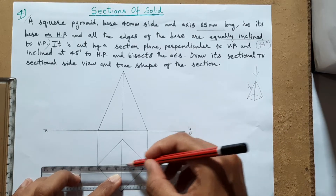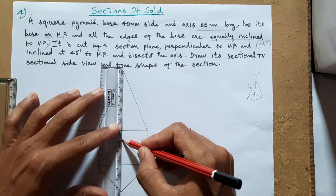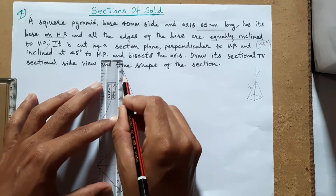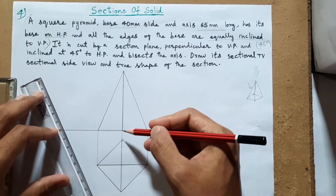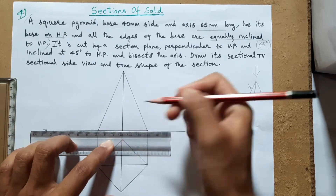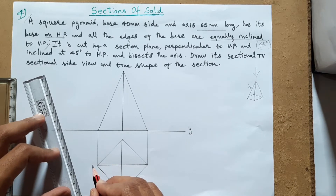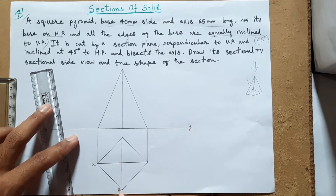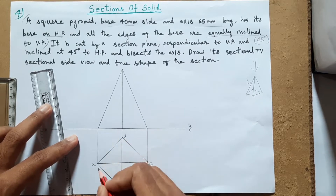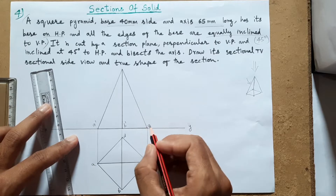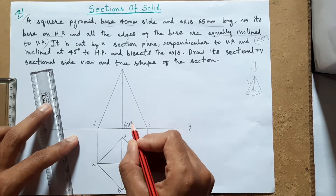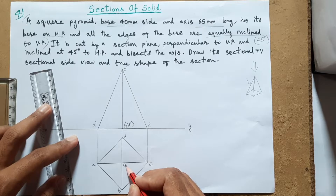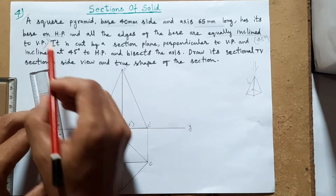If you are seeing from the front side, this vertical edge will be somewhere here. Whenever a visible edge and axis overlap, you have to give preference to the visible edge, so the axis will be hidden because of the edge. Let us give notations: A, B, C, D for the base. Here comes A-dash, B-dash, C-dash on the front, D-dash on the back side, and O-dash for the apex on top, O at the bottom. This is how front view and top view are completed for the square pyramid.